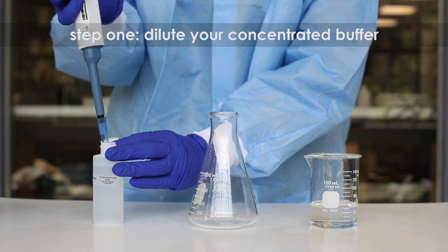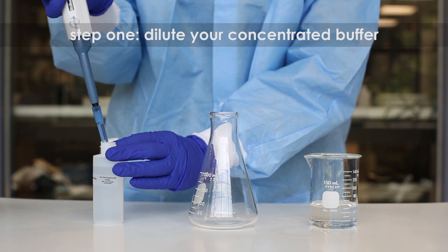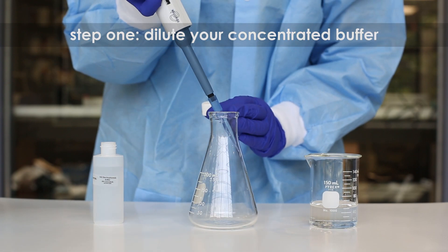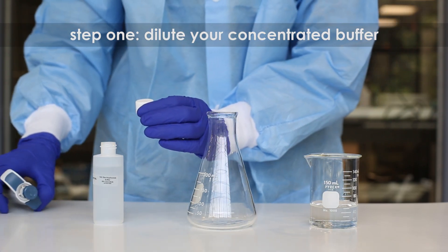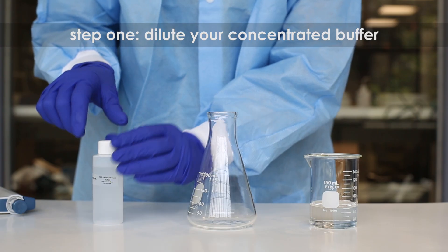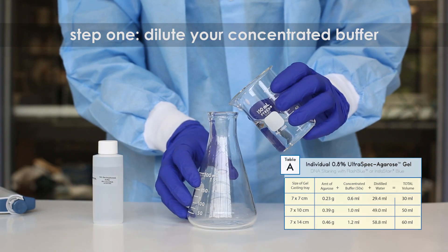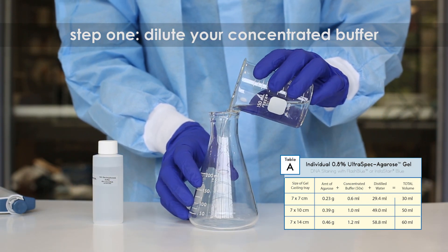Let's get started. Step 1. Dilute your concentrated buffer with distilled or deionized water. Refer to Table A for the specific amount according to your casting tray size.